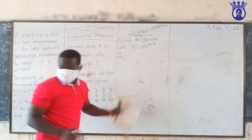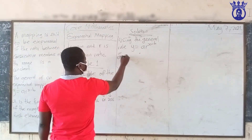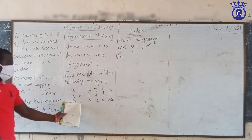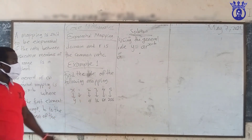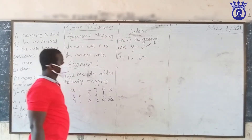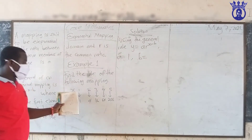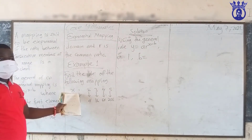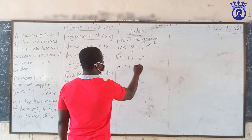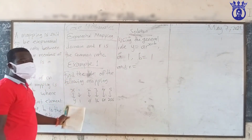In solving this: A is the first element of the range, which is one, so A equals one. B is the first element of the domain, which is also one, so B equals one. R is the common ratio — four divided by one gives us R equals four.